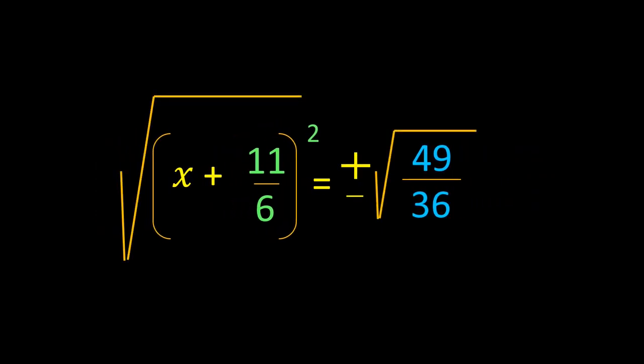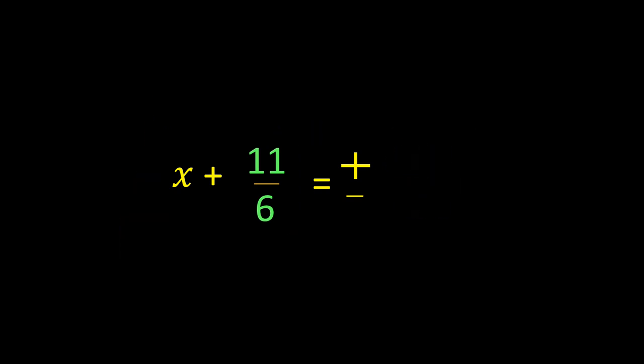That equals 49/36 on simplification. To find the roots, or to find the value of x, we are going to take the square root on both sides of the equation. Taking the square root on the LHS, the square and square root cancel. On the RHS, the square root of 49/36 is ±7/6.